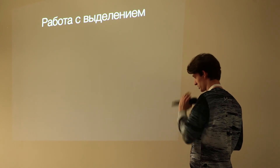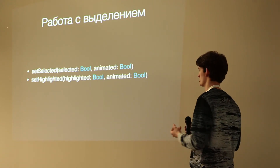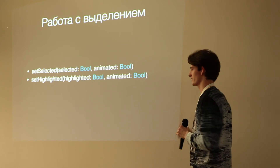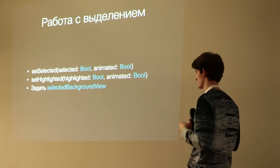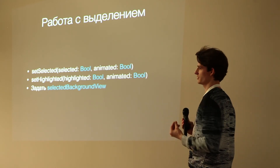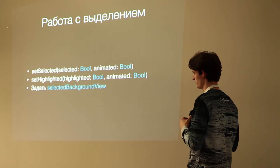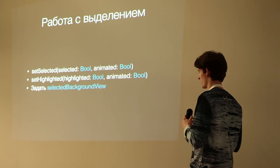Работа с выделением тоже довольно тривиальна. Есть два метода — setSelected и setHighlighted — вам достаточно их перегрузить и задать свои способы анимирования. Другой момент: если просто не нравится цвет выделения или как контент переопределяется, можно задать любой view, не задавая рамки, в selectedBackgroundView — он сам растянется на всю ячейку и по нажатию будет перекрывать. Если нужно просто поменять цвет выделения или показывать с какой-то альфой, этот view как раз для вас.